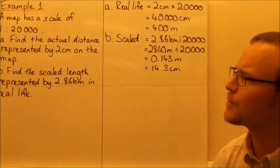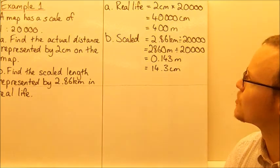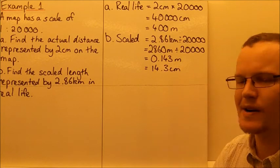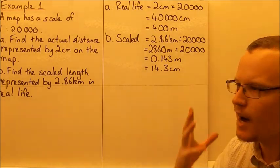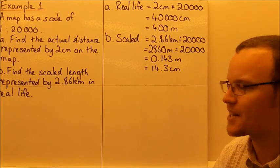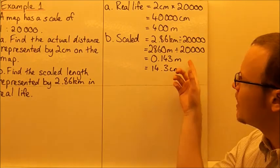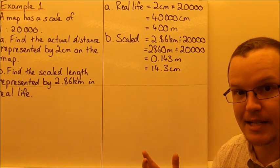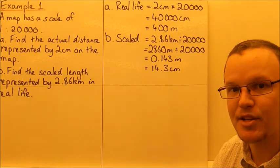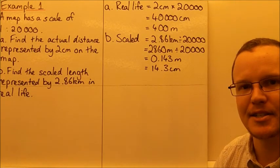Now finding the scale distance: how far would 2.86 kilometres be on the map? We divide by the scale factor of 20,000. Converting to metres: 2,860 metres divided by 20,000 equals 0.143 metres on the page. Converting to centimetres by multiplying by 100, we get 14.3 centimetres. So 14.3 centimetres on the map represents 2.86 kilometres in real life.